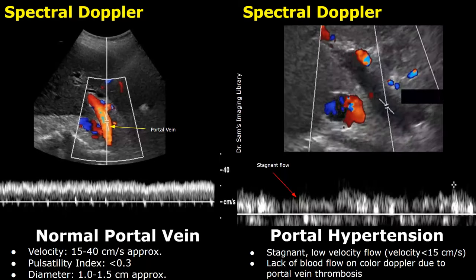Here is another case of portal hypertension showing stagnant low velocity flow. On color Doppler we cannot even see the Doppler signals because the flow is very slow — much less than 15 centimeters per second. There is also portal vein thrombosis in this image.